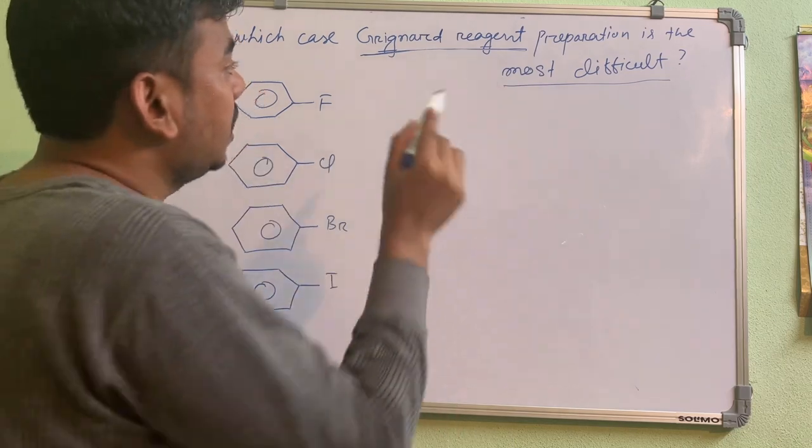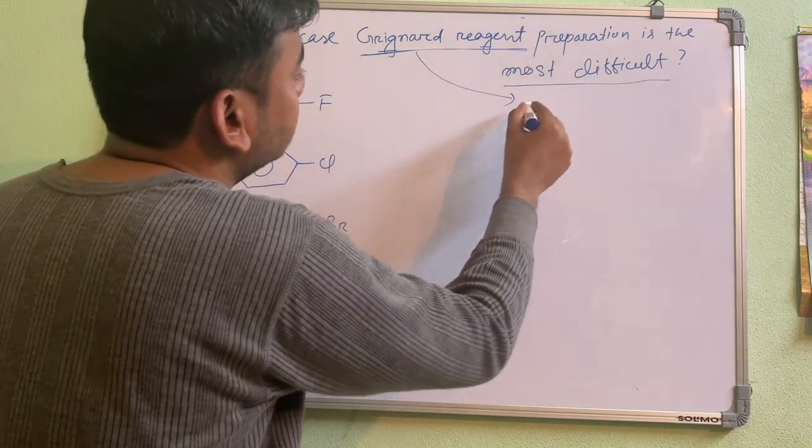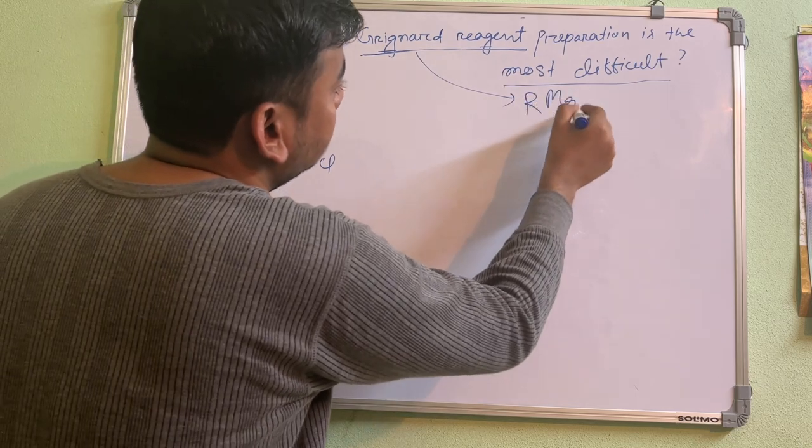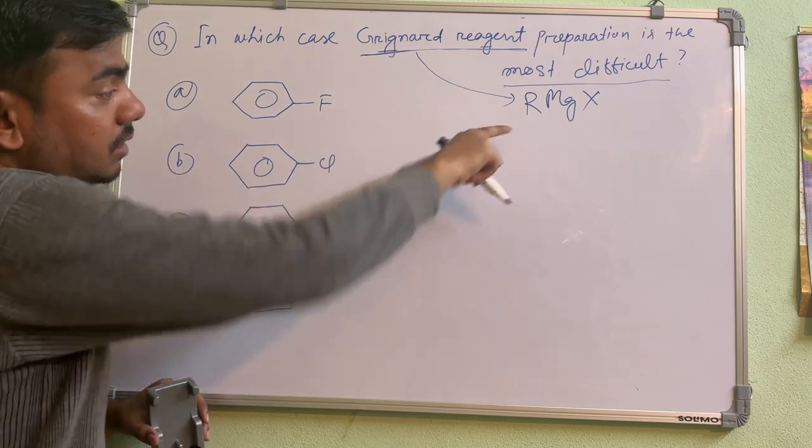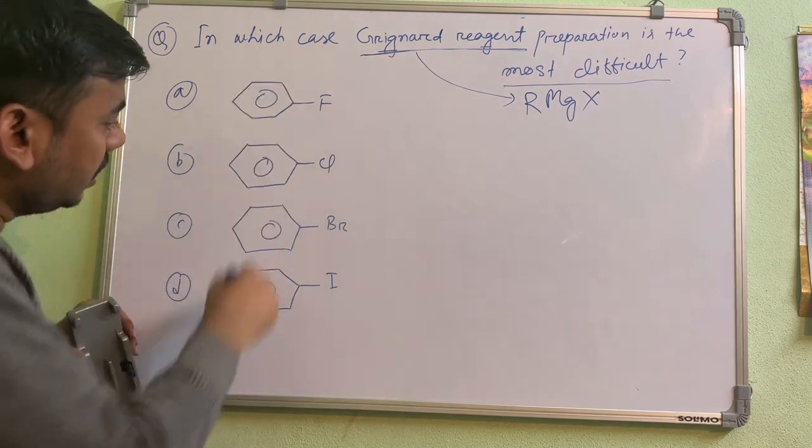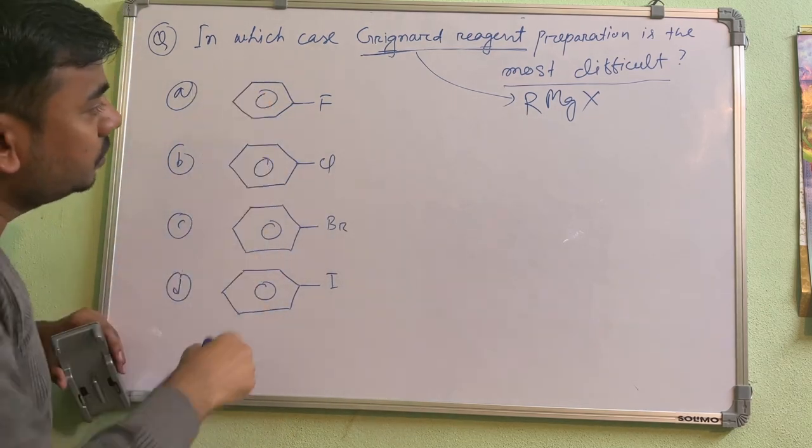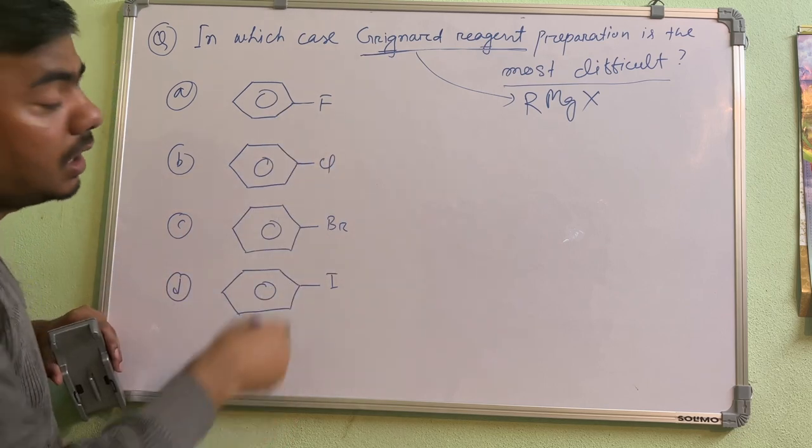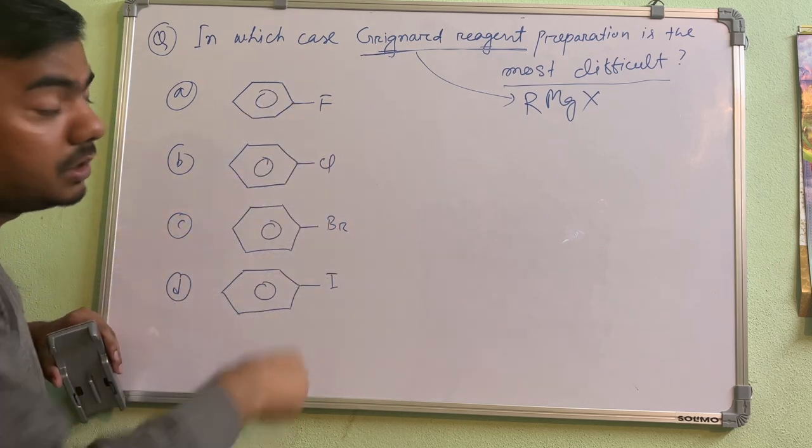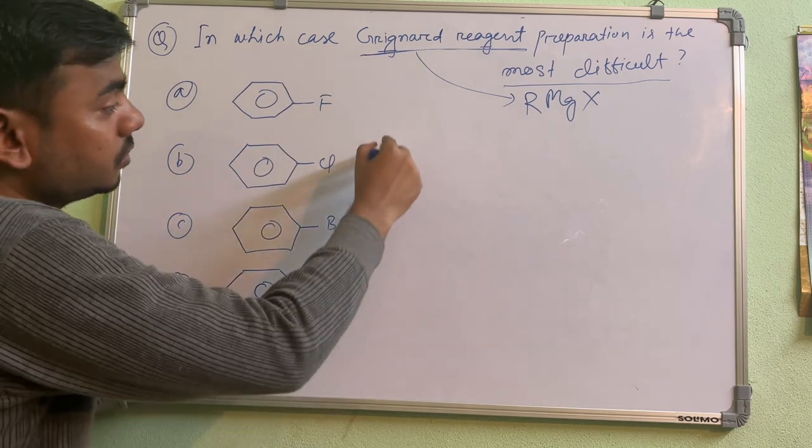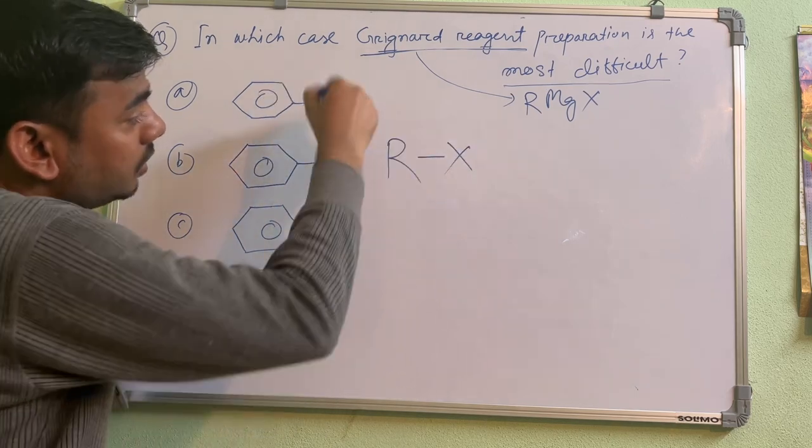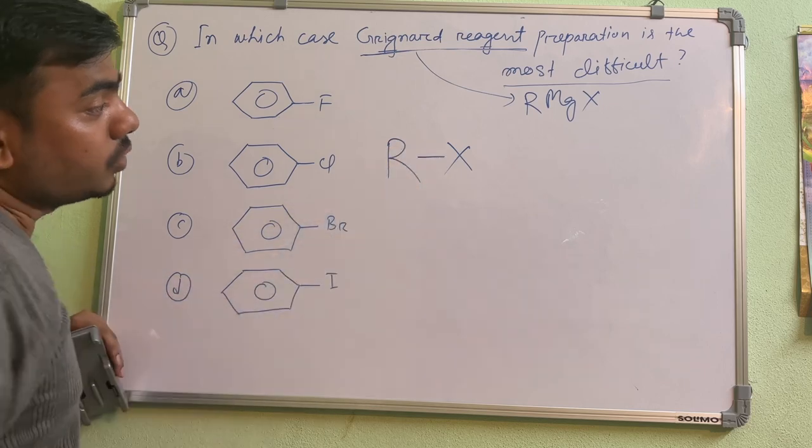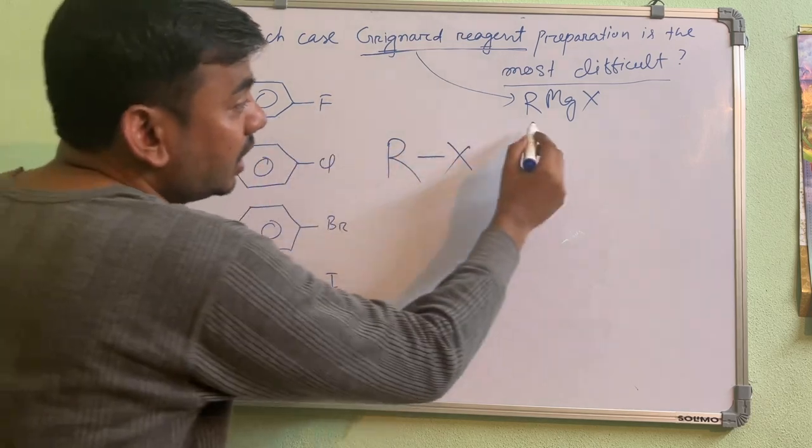RMgX is Grignard reagent - RMgX. Why I am saying this is easy, you will understand. Because here in the options, if you see, everywhere with benzene they are attached with fluorine, chlorine, bromine, iodine. These are nothing but halogens, so this is basically RX. RX is already there, but what is your target? Your target is RMgX.